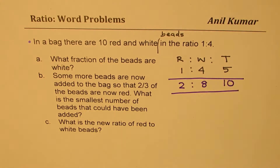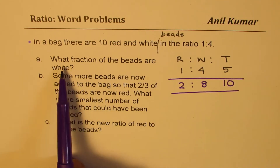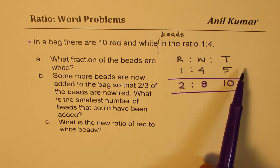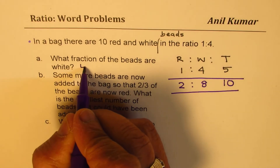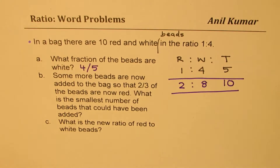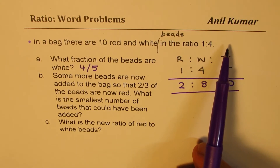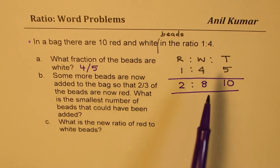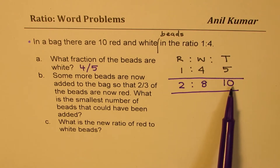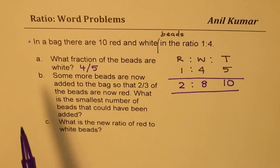So we have 2 red and 8 white to make 10. What fraction of the beads are white? From the ratio 1 to 4, total is 5, so 4 out of 5 are white — that is the answer. If there are 10, it is 8 out of 10, which simplifies to 4 out of 5. Same result.